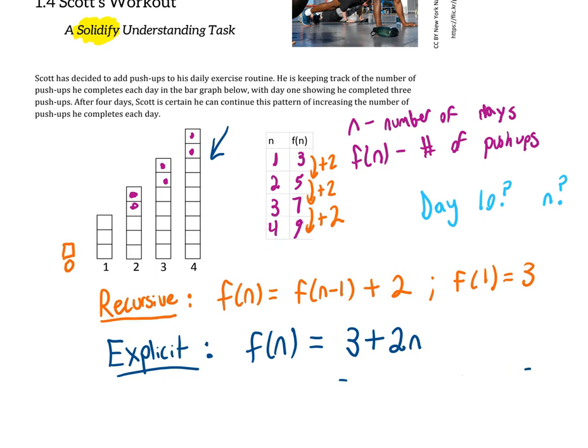We know he did nine push-ups on the fourth day, so that's kind of odd. It's not working the way we'd expect. The reason is because we're starting on the first day and not the zeroth day. So we have to do an adjustment, and that adjustment is to make this n minus one instead of n.